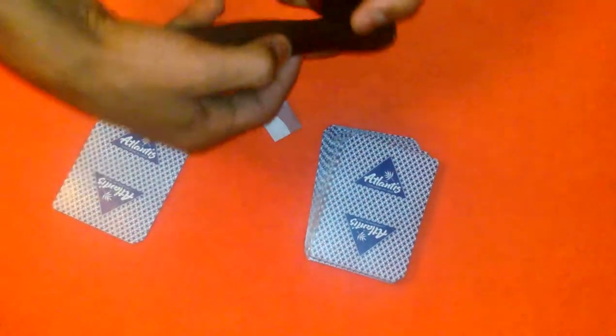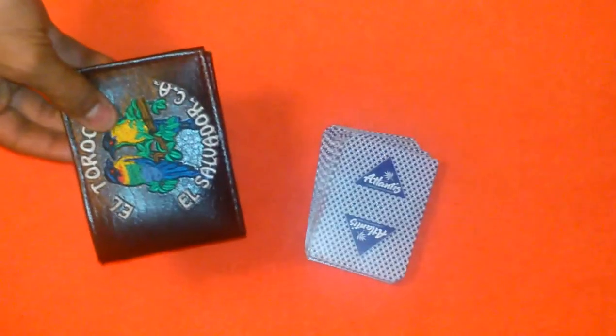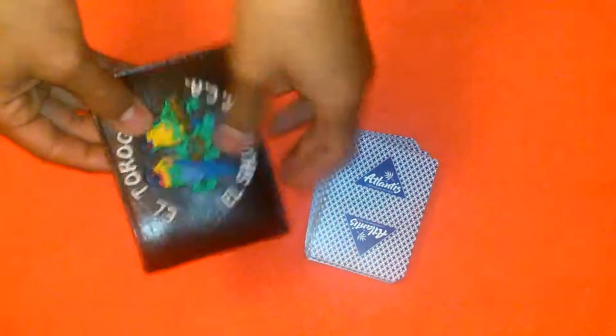Take the paper and put it inside of the wallet and show them that the wallet is empty except for this little piece of paper which is a prediction. Take the ten and put it face up under the deck in this way, like that.